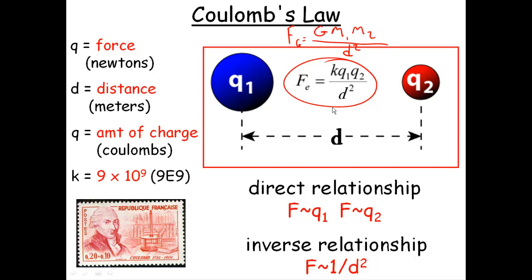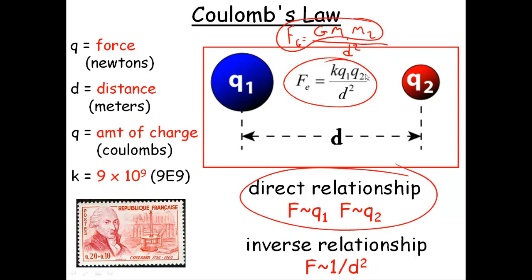It's the same format, and therefore we know things such as the direct relationships. Just like the force was directly related to the mass in Newton's Law of Universal Gravity, the force is directly related to the charge — that's what the Q represents, the charge. We measure that charge in Coulombs. The distance is still the same — that's an inversely related variable. In fact, it's not just inversely related, but it's inversely squared, and it follows this inverse square law.